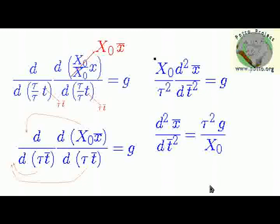Which has three parameters: x bar, t bar, and this new parameter which is the Froude number.